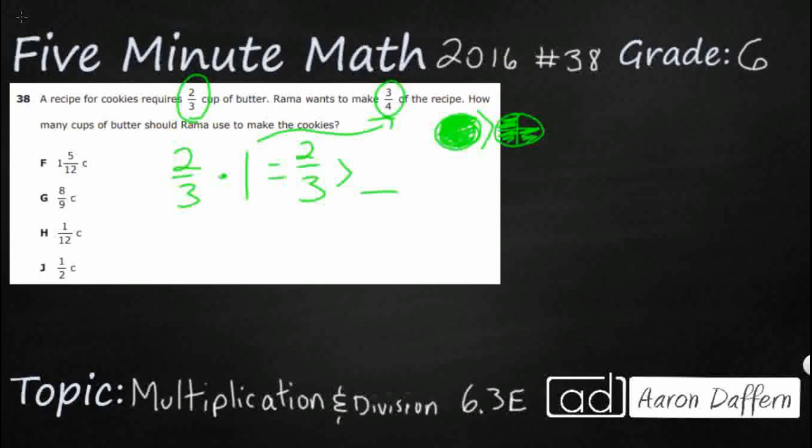So let's see if we can line this up here. What we're going to do is we're just going to multiply these two fractions because she wants to take three-fourths of two-thirds. And so three-fourths, two-thirds.